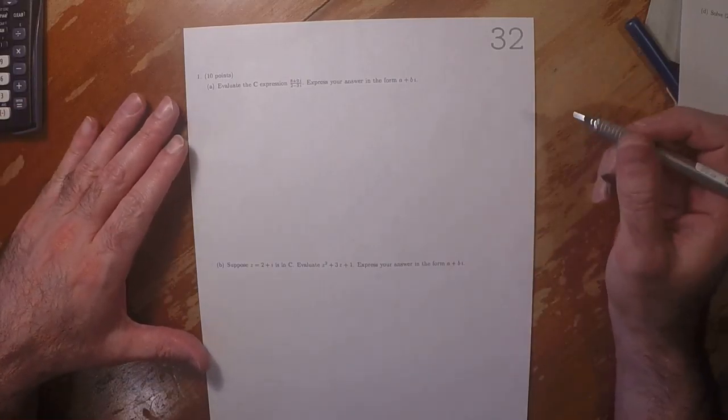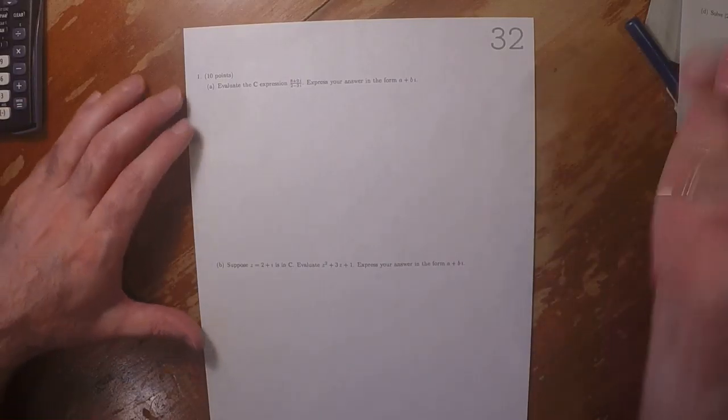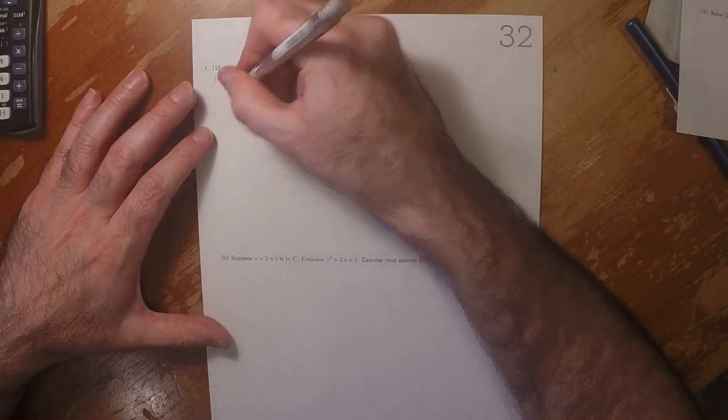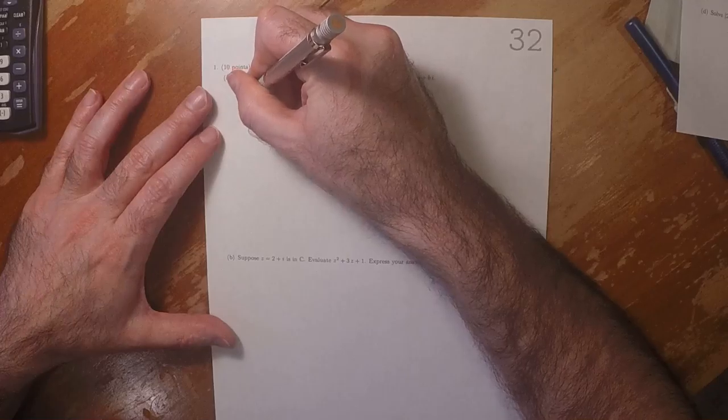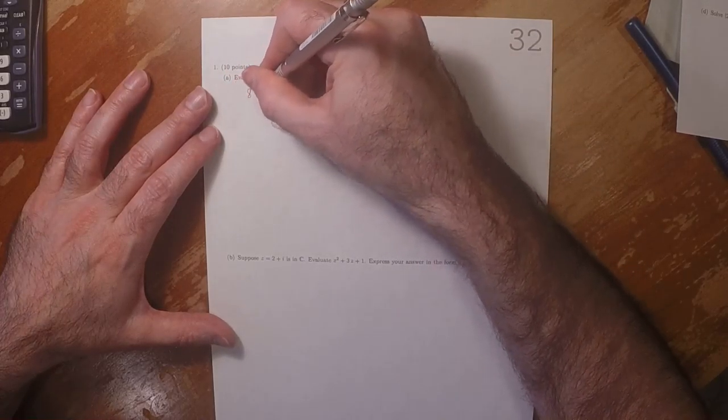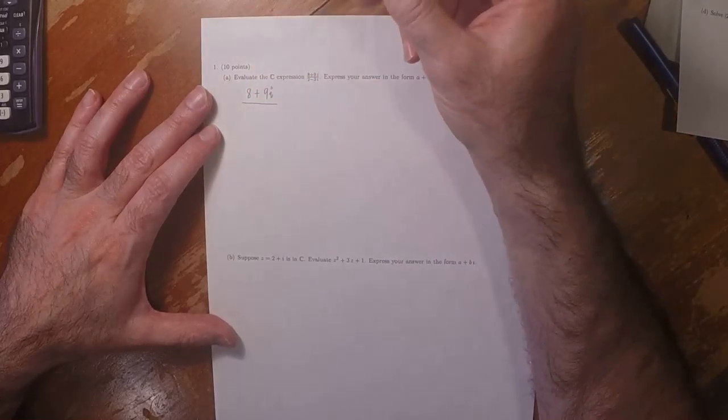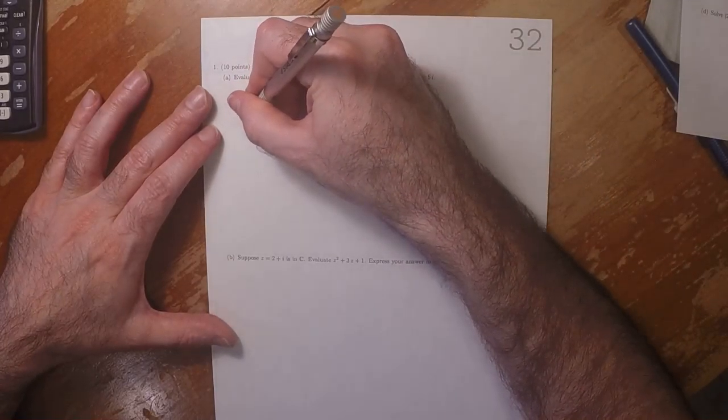This is the solution to written homework 32. We're requested to evaluate this complex expression: 8 plus 9i divided by 2 minus 3i.